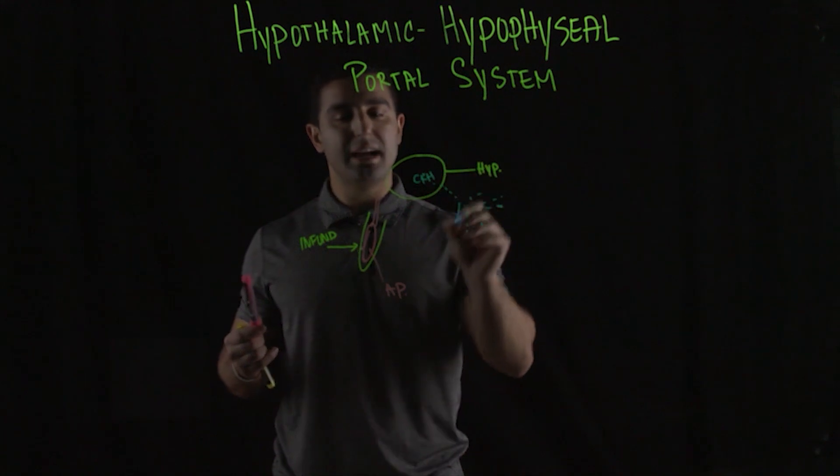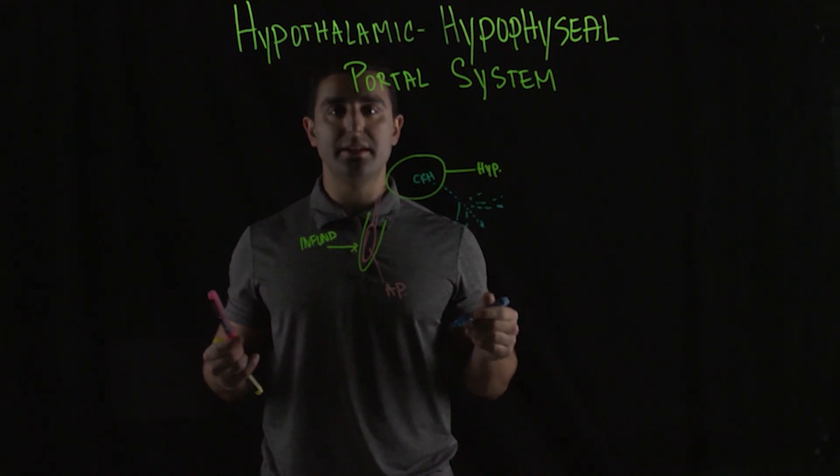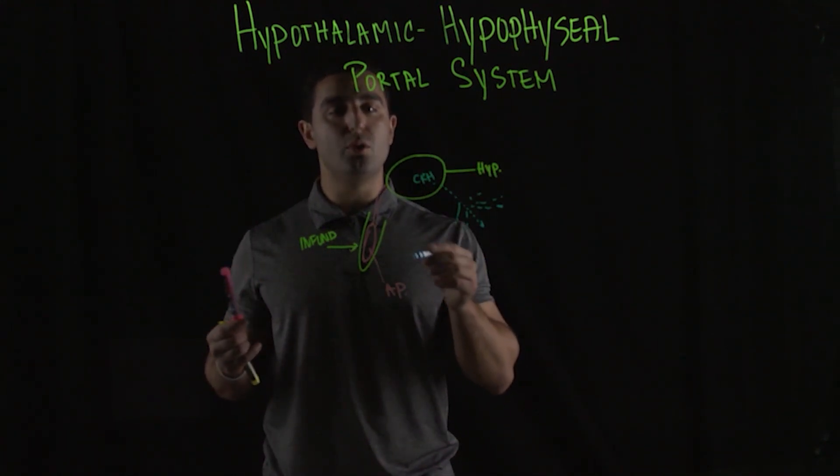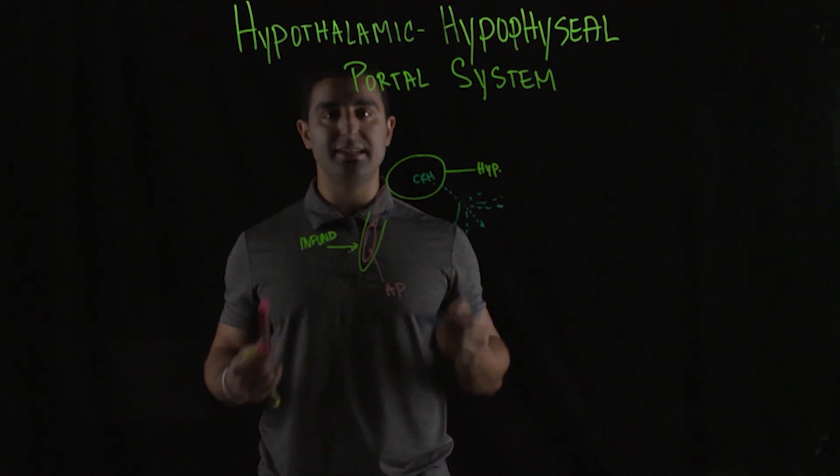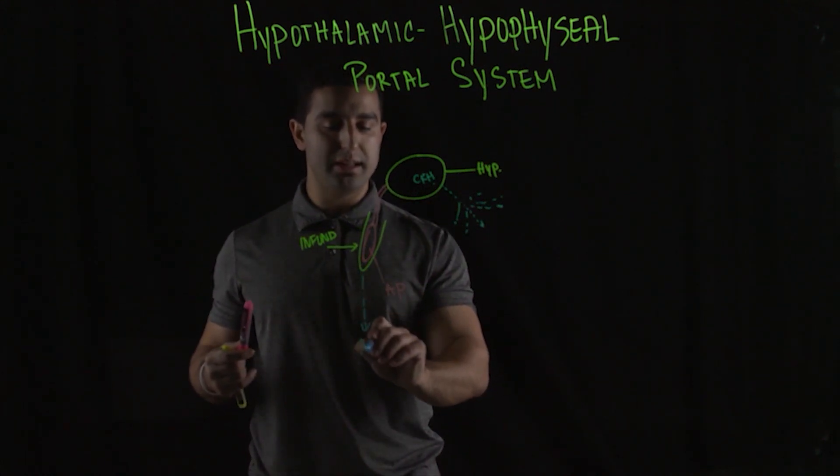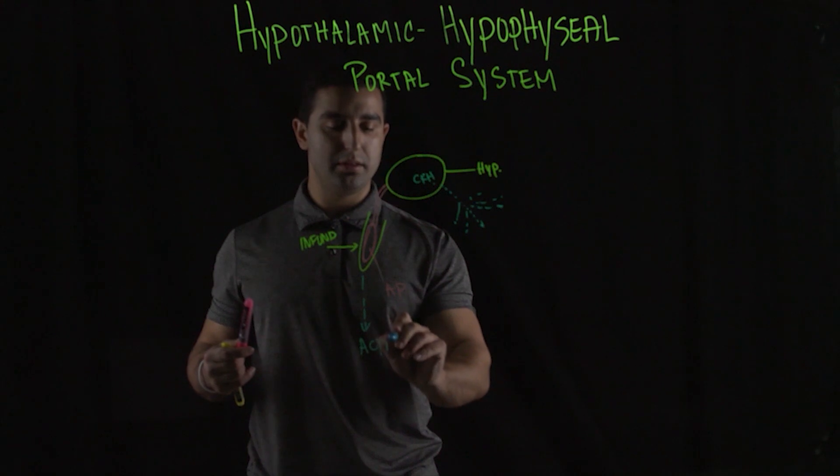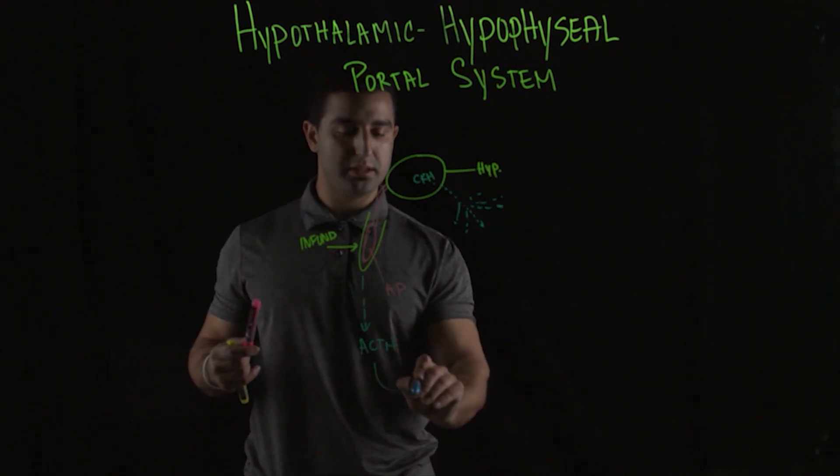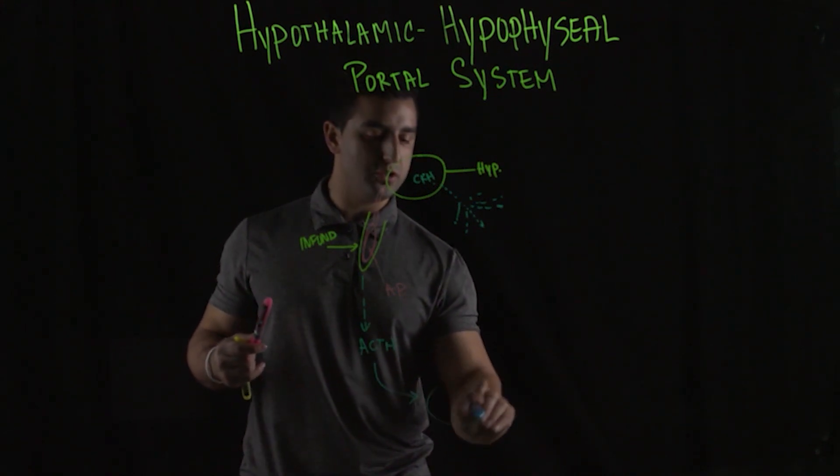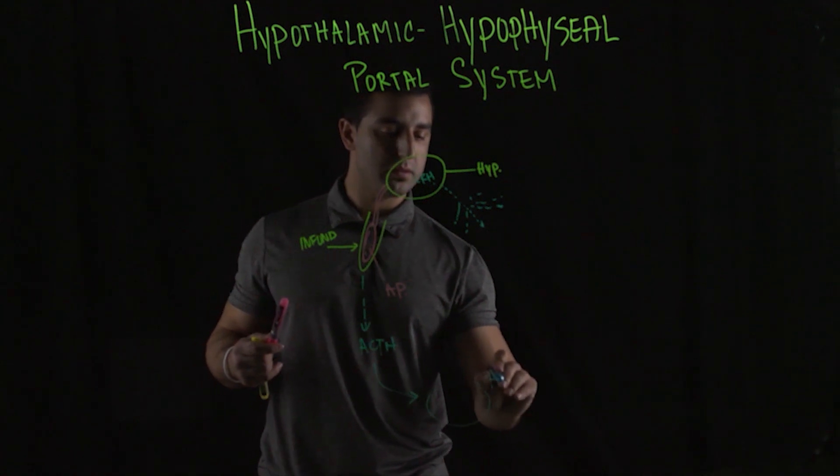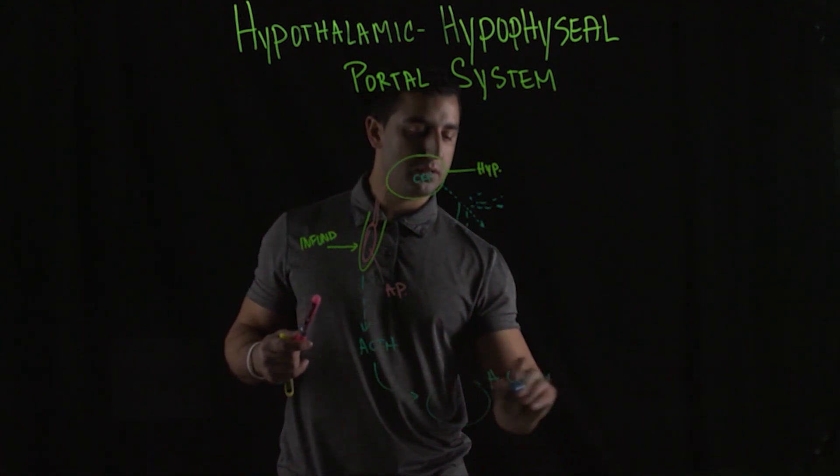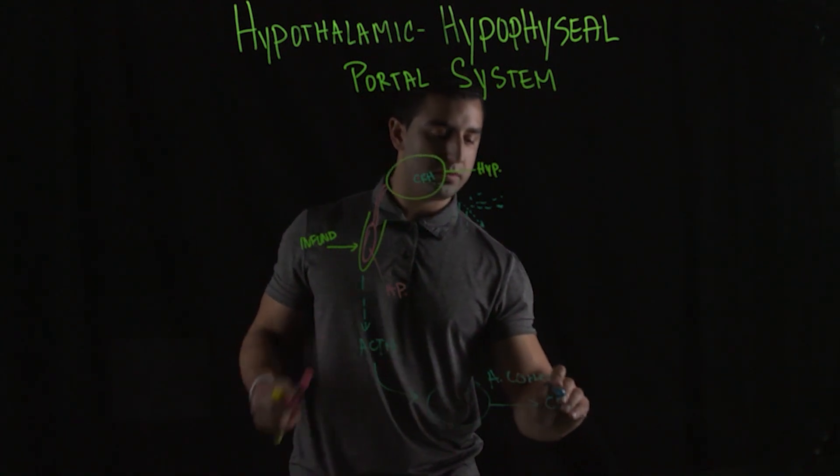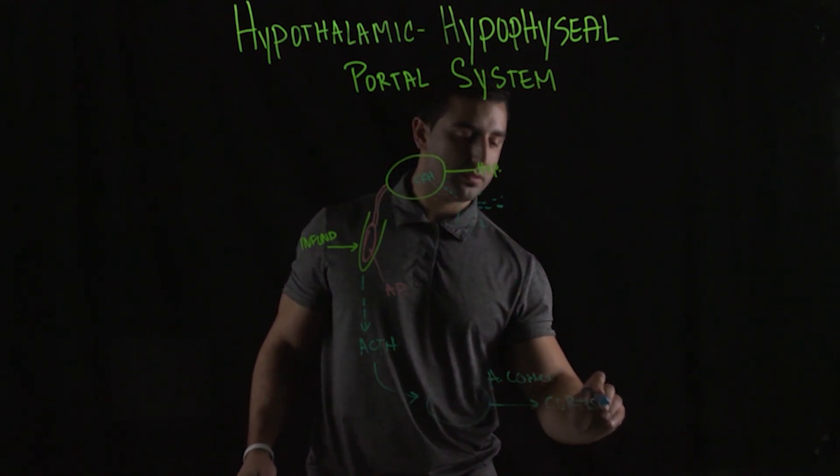And so by the time it reaches the anterior pituitary system when leading to the corticotropic cells to release ACTH—the whole goal of this is to secrete ACTH, and then go into the adrenal cortex to secrete cortisol.